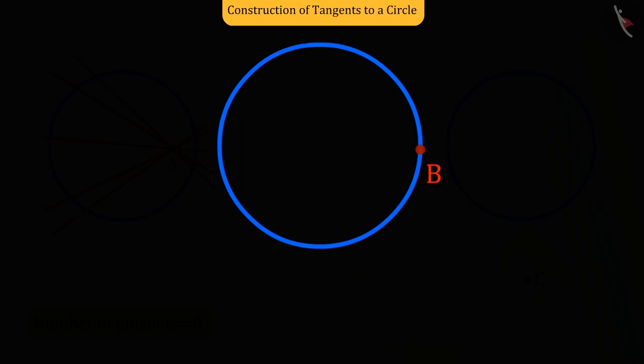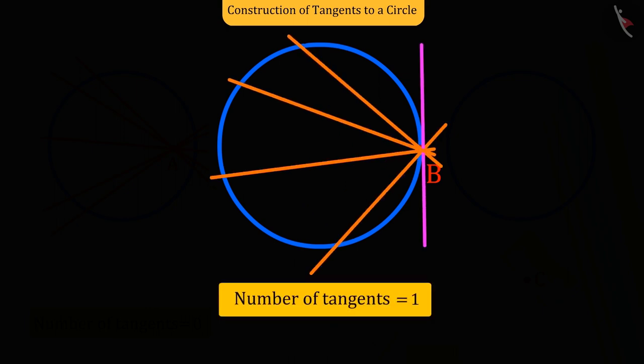The point here is on the circle, and we know that from any point on the circle, there is only one tangent that can be drawn.